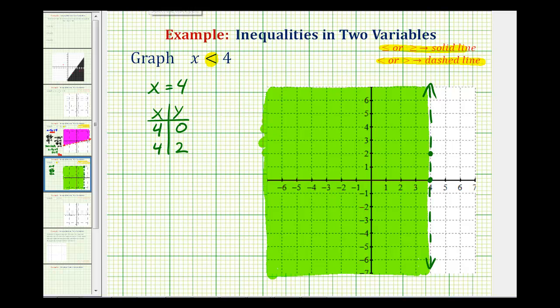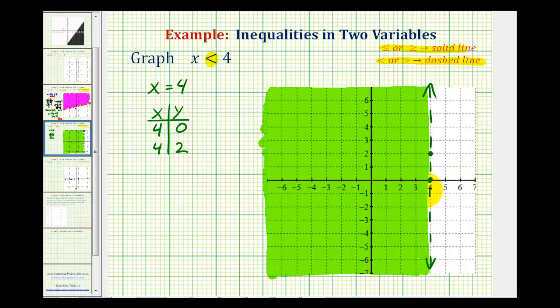Every point in this region would have an x coordinate that is less than 4. The line would contain all the points where the x coordinate is equal to 4 and does not satisfy the inequality. And the points to the right of this line contain all the points with x coordinates greater than 4 or are not less than 4 and therefore are not part of the solution.